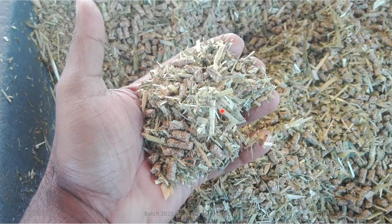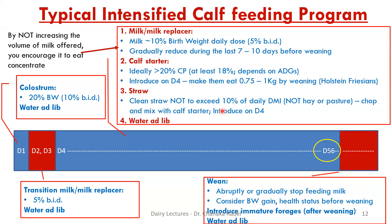Now we've covered all ingredients fed to a calf during the pre-weaning period: colostrum, then milk or transitional milk, water introduced on day one, then calf starter and roughage. Those are the five things calves consume: colostrum, milk, water, roughage, and concentrate. This particular feeding timeline assumes calves are weaned at day 56 — which is eight weeks — but that is not a rule set in stone.